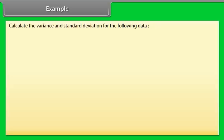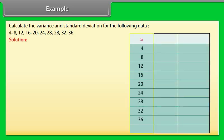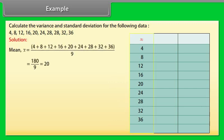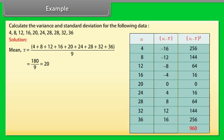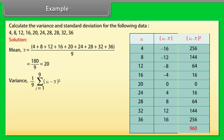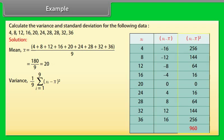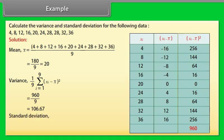Example: Calculate the variance and standard deviation for the following data. The mean of the observations is found by summing and dividing by 9. The deviations from X̄ and their squares are calculated; the sum of squared deviations is 960. The variance = summation from i=1 to 9 of (Xᵢ − X̄)² / 9 = 106.67. The standard deviation = √106.67 = 10.37.